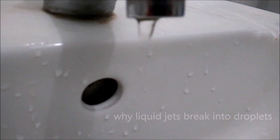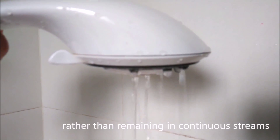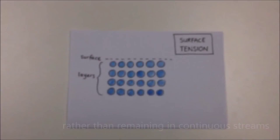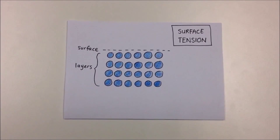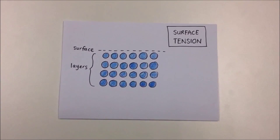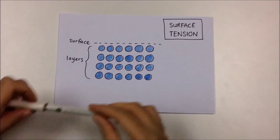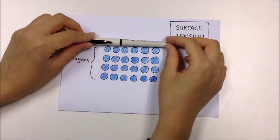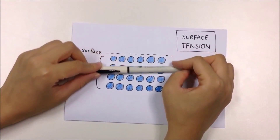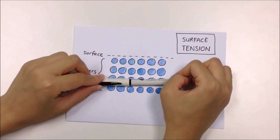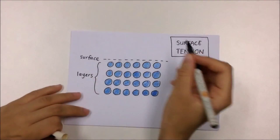Why do liquid jets break into droplets, rather than remaining in continuous streams? First, we need to understand what surface tension is. Surface tension is the force acting parallel to the surface of a liquid that pulls inwards against any attempt to extend surface area.